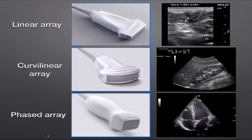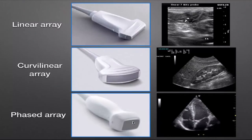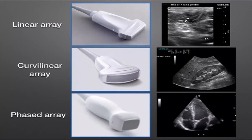The phased array probe — discussed extensively in this lecture series — sends out a wedge-shaped beam from a single point with a narrow footplate of about 1–2 cm by 1–2 cm. This allows it to sit in the intercostal space very nicely. Using electronic phased delays to steer the ultrasound waves in different directions, it can image as much of the heart as possible while keeping the probe in one position.